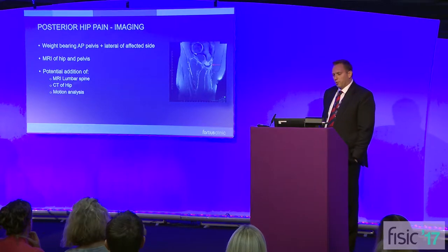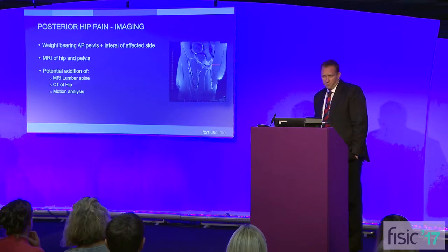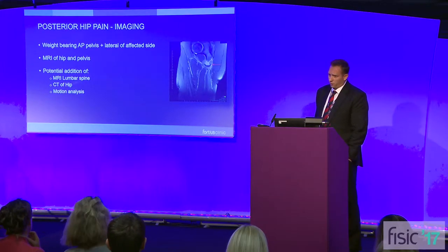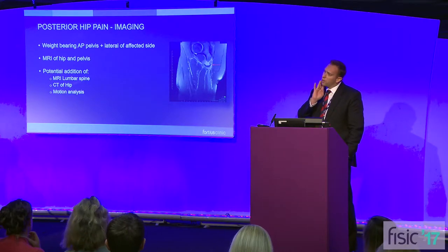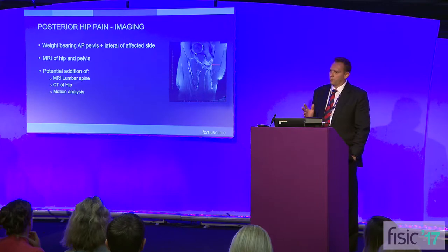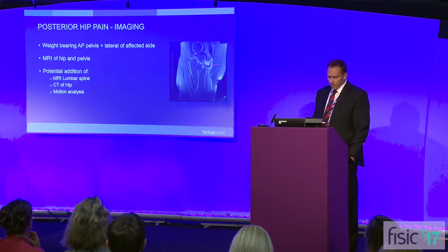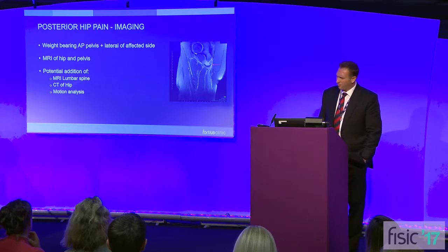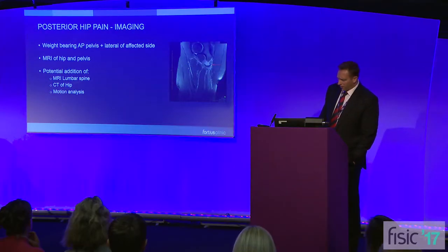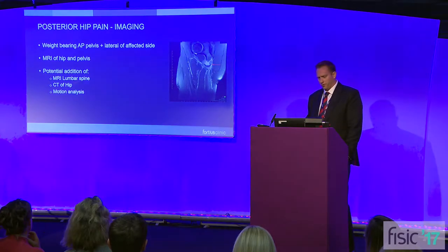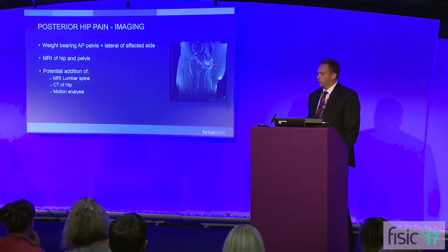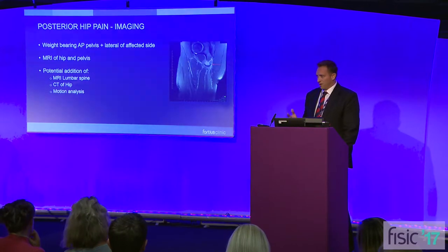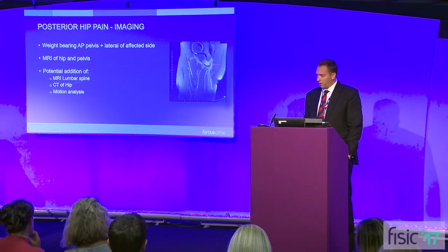Moving on to imaging: the weight-bearing AP pelvis is something that always gets forgotten. I think it's extremely important because it gives you an overview of anatomy and a view on the pelvic tilt of that patient. The next step is obviously MRI, but MRI doesn't diagnose everything. If you think there is any sign of neurological or facet joint issue, scan the lumbar spine as well — have a very low threshold for that.